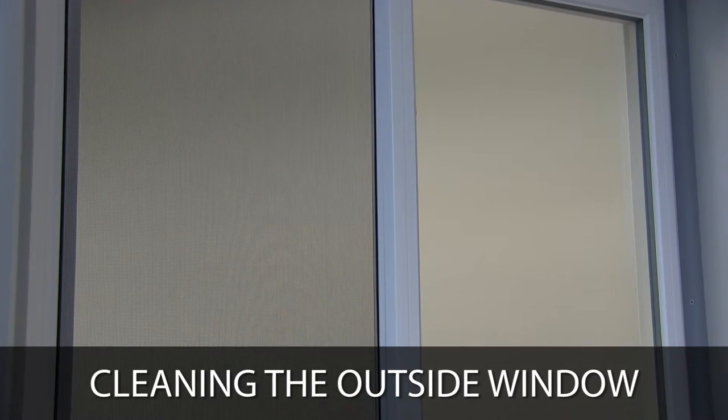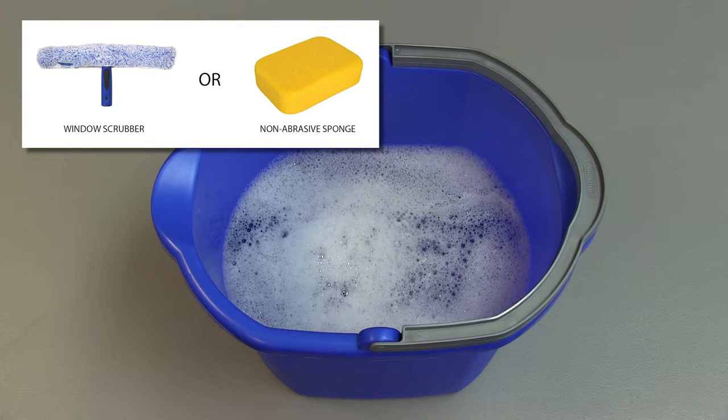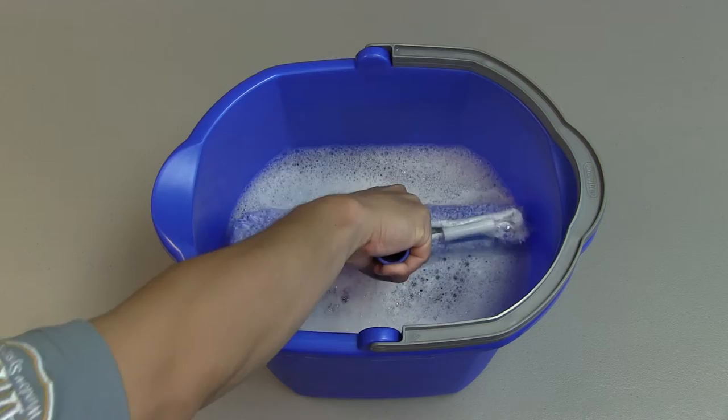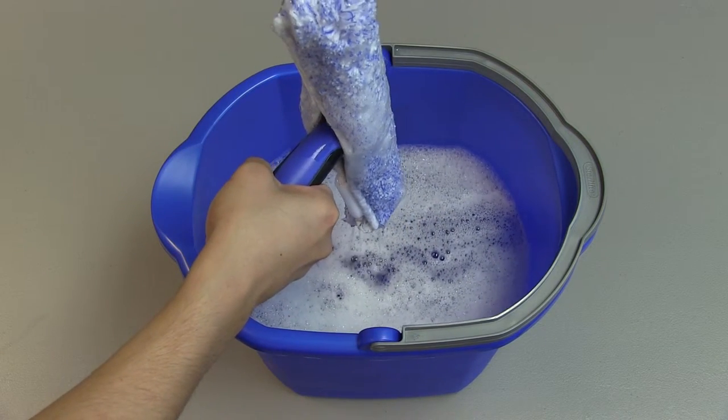To clean the outside of your window, dip a window scrubber or non-abrasive sponge into a bucket with a mixture of mild dish soap and water. Let any excess cleaning solution run off.